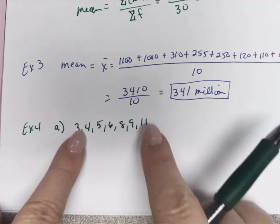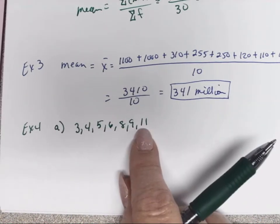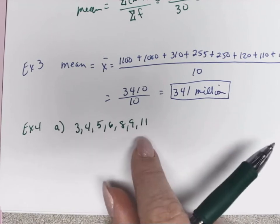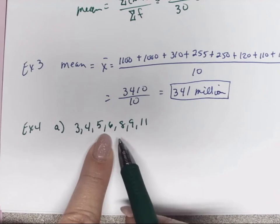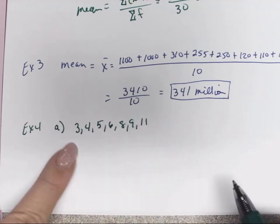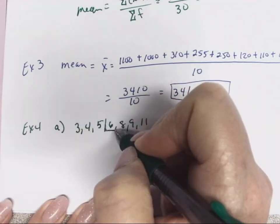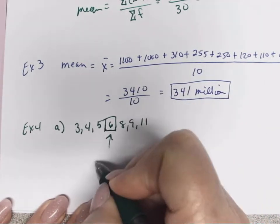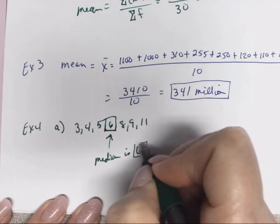We're looking for our middle number. You can either count all the way in or you can see that we have seven numbers. If we look at this number, there are three on this side and three on that side. So the median is 6 in this case.